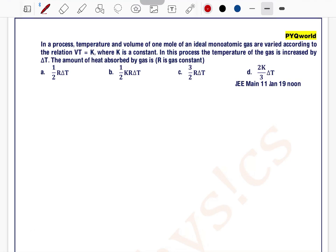In a process, temperature and volume of one mole of an ideal monoatomic gas are varied according to the relation VT equals k, where k is a constant. In this process, the temperature of the gas is increased by delta T. The amount of heat absorbed by the gas is...